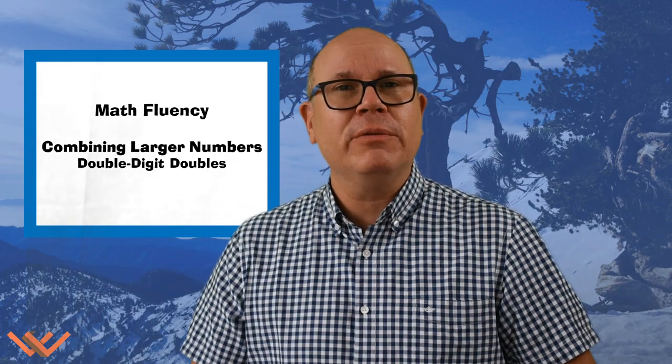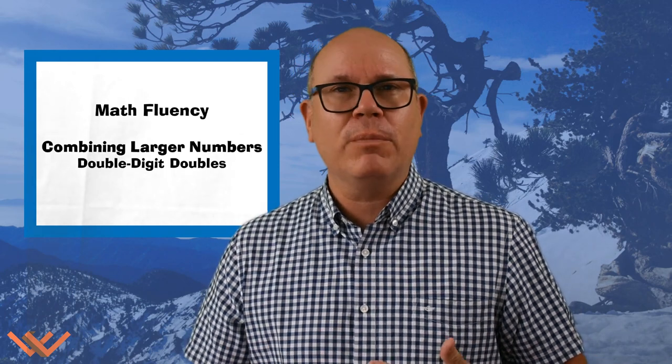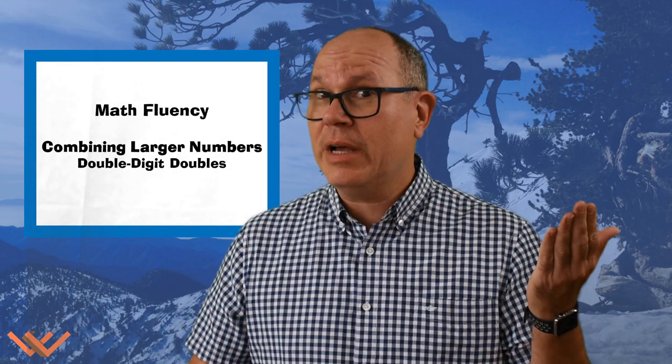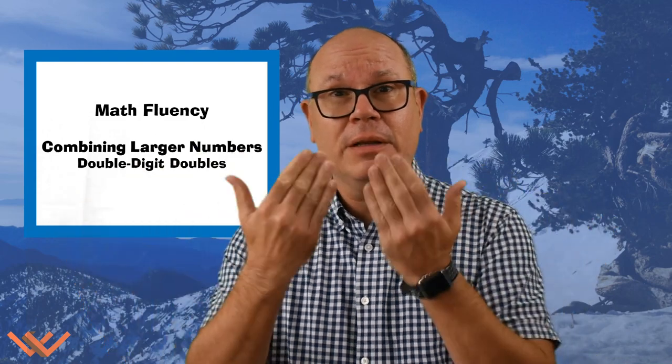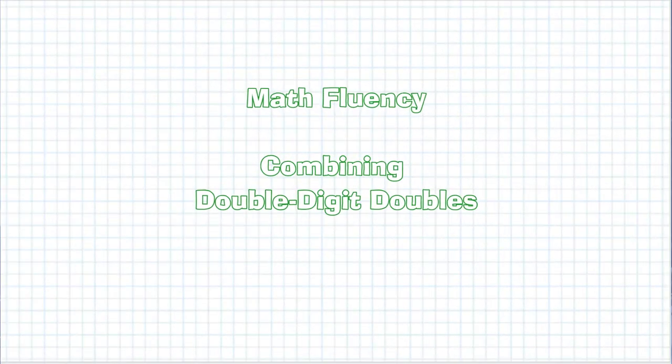Today we're going to be going over double-digit doubles. What does that mean? That means we're going to be working with stuff like 21 plus 21, 34 plus 34, 52 plus 52. See how those are doubles? One side is the same as the other on that plus side. Let's get to work on our double-digit doubles.